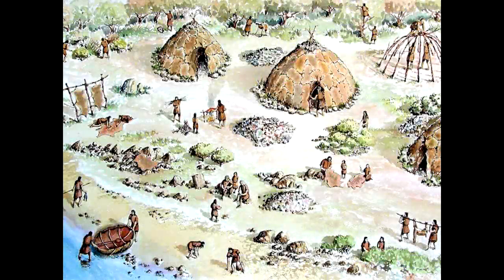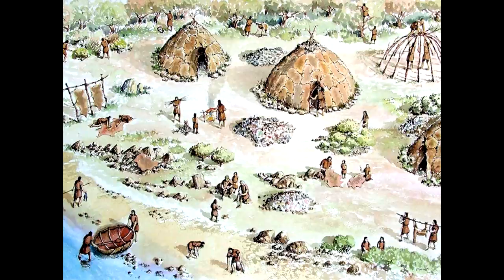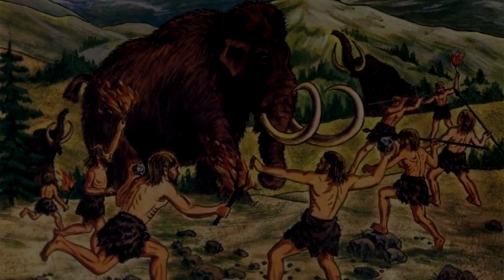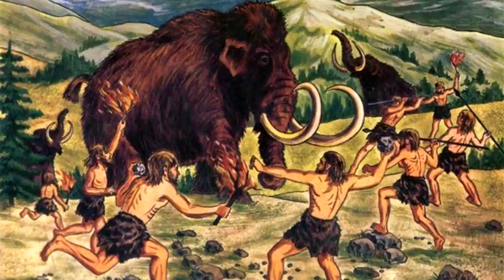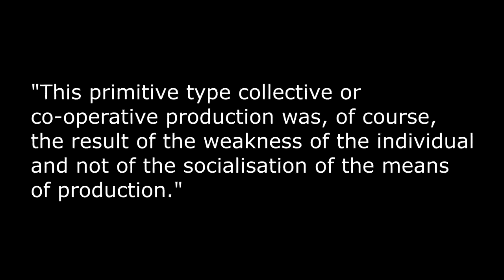In primitive communal society, the basis of production relations is communal property, which corresponds to the character of the productive forces in this period. The first kind of property was collective — owned by the entire herd or tribe — and private property had not been invented yet. This is because everybody had to work together; nobody could survive as an independent producer. So it wasn't possible to have private property — everybody had to be a collective producer. Marx says: 'This primitive type of collective or cooperative production was the result of the weakness of the individual and not of the socialization of the means of production.'